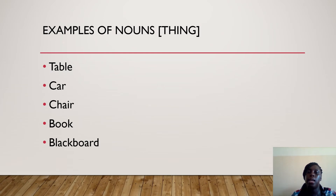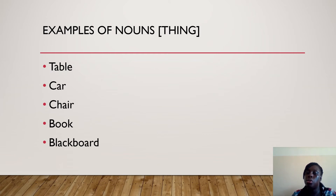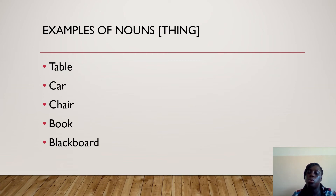You can add examples of nouns as in things. As you can see on your screen: table, chair, card, book, blackboard, and the rest. You can add. Table, card, chair, book, blackboard — they have a name, so it is a noun.